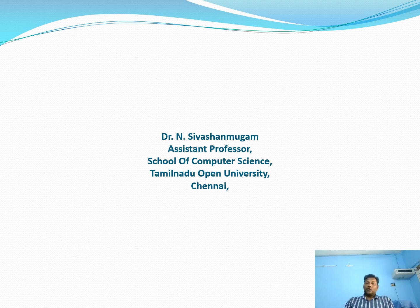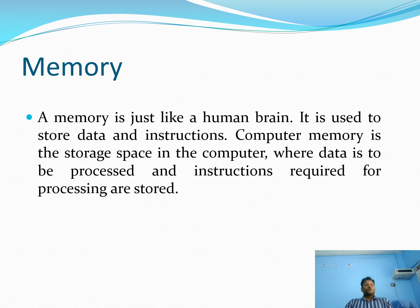Today we are going to see about memory — memory management, memory types in computer systems. What is memory? Memory is just like a human brain. It is used to store data and instructions. Computer memory is the storage space in the computer where data has to be processed and instructions required for the processing are stored.